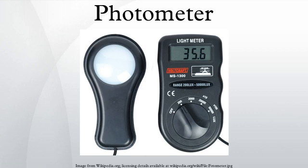Rumford's Photometer depended on the principle that a brighter light would cast a deeper shadow. The two lights to be compared were used to cast a shadow onto paper. If the shadows were of the same depth, the difference in distance of the lights would indicate the difference in intensity.